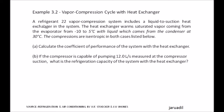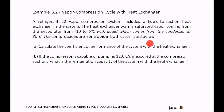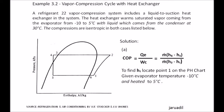Let us take an example of vapor compression cycle with heat exchanger. A refrigerant R-22 vapor compression system includes a liquid-to-suction heat exchanger. The heat exchanger warms saturated vapor coming from the evaporator from negative 10 to 5 degrees Celsius, with liquid which comes from the condenser at 30 degrees Celsius. The compression is isentropic. (A) Calculate the coefficient of performance. (B) If the compressor pumps 12 liters per second at the compressor suction, what is the refrigerating capacity?